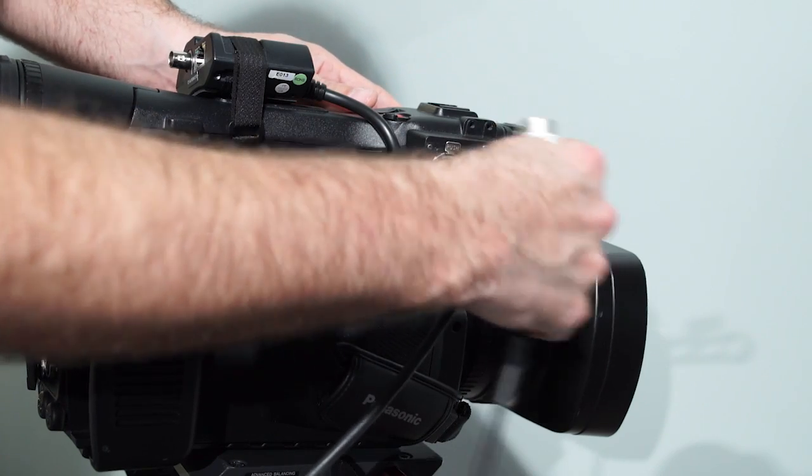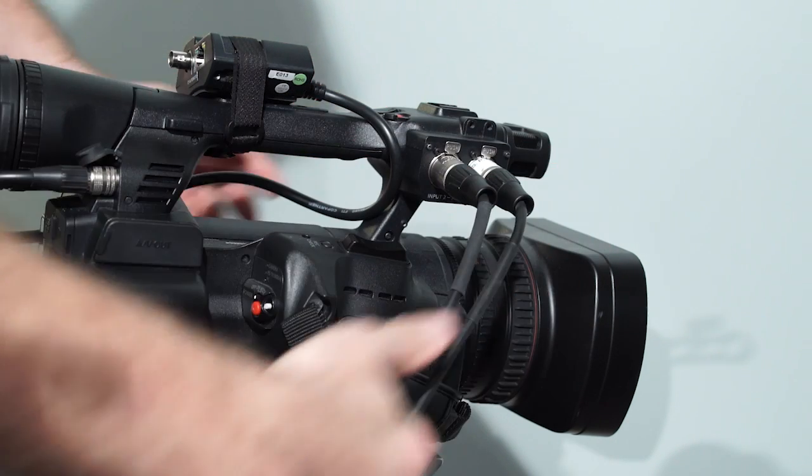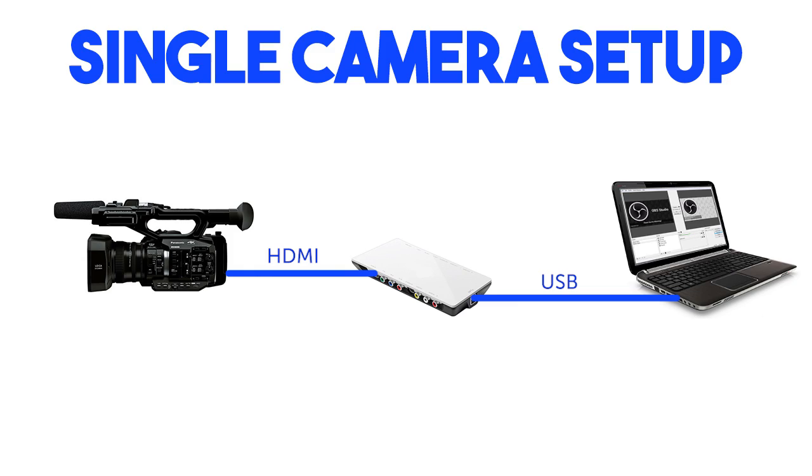There are several reasons you'd want to use an external camera through a video interface, like this Blackmagic Intensity Shuttle. First, it allows you to use better cameras with better lenses, longer zoom capability, and more control over exposure, and use external audio inputs, all of which are important in a production environment.